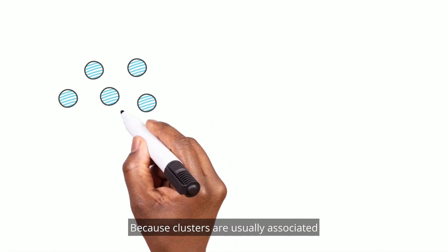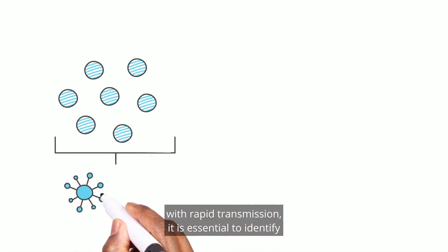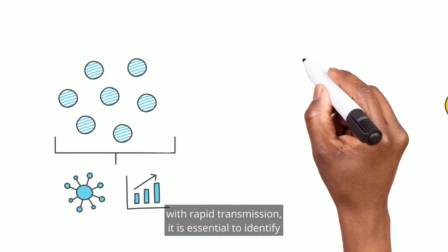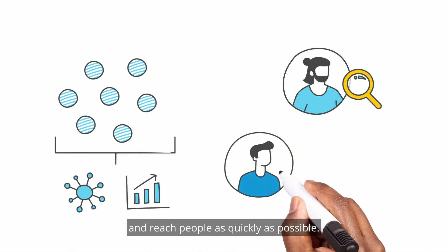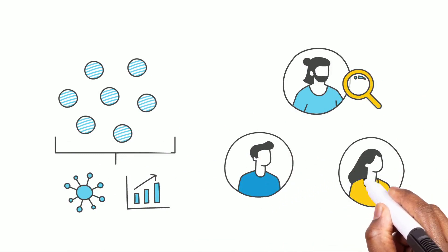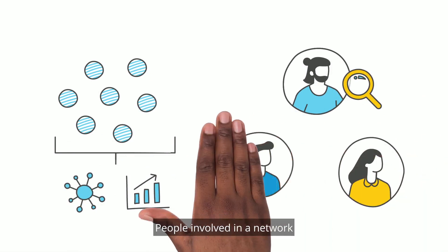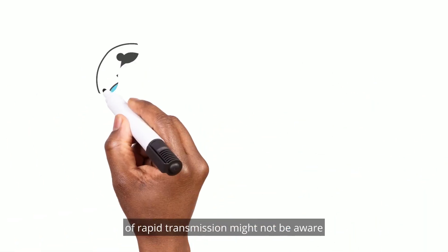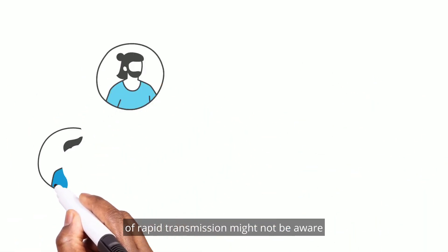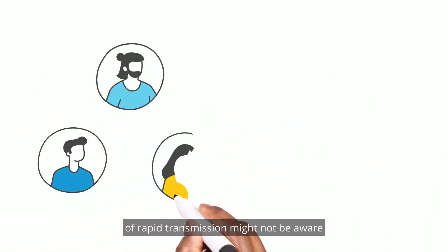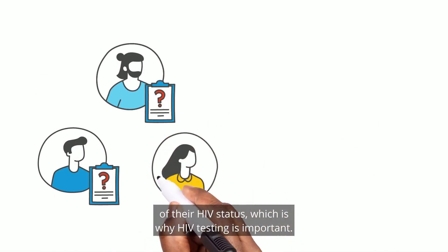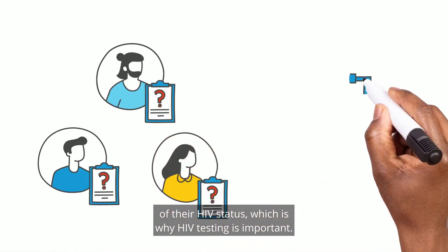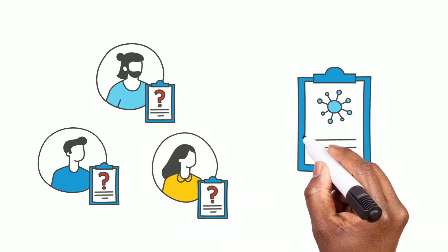Because clusters are usually associated with rapid transmission, it is essential to identify and reach people as quickly as possible. People involved in a network of rapid transmission might not be aware of their HIV status, which is why HIV testing is important.